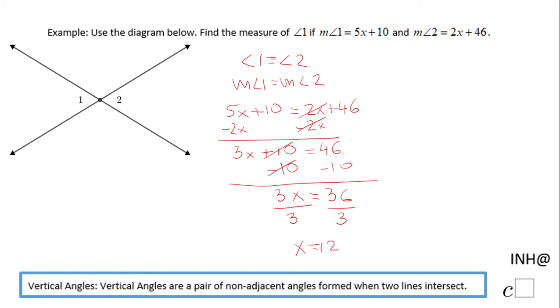And now we need to find the measure of angle 1. For that reason I'm going to go back in my angle 1 which is 5x plus 10 and I'm going to replace x with 12.